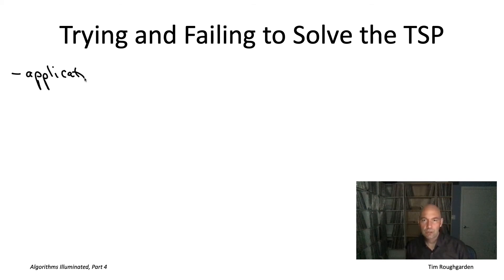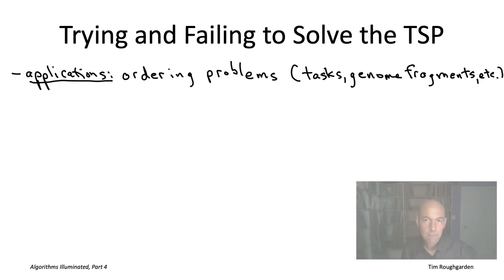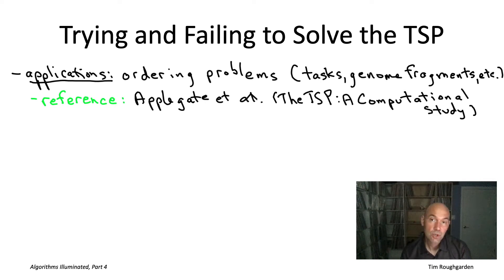Or for a very different application in computational genomics, you could imagine that maybe you have a bunch of short fragments of a genome that are partially overlapping. And you would like to reverse engineer the most plausible ordering in which those fragments appear on the genome. So if I give you a pairwise plausibility measure, for each pair of fragments how likely they are to be adjacent, for example maybe based on the length of their longest common substring, then to reverse engineer the most plausible ordering, that again is exactly a traveling salesman problem. So if you want to learn more about the many applications of the traveling salesman problem and also a lot about its fascinating history, there's a nice book from 2006 by Applegate, Bixby, Chvátal and Cook, which you can check out.